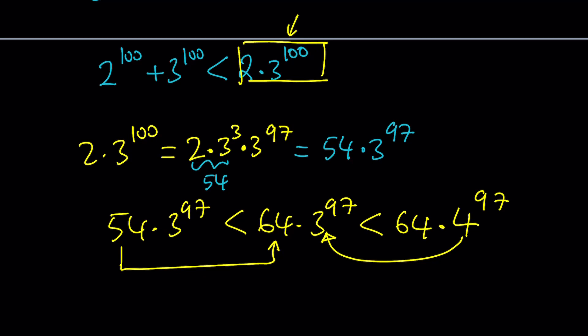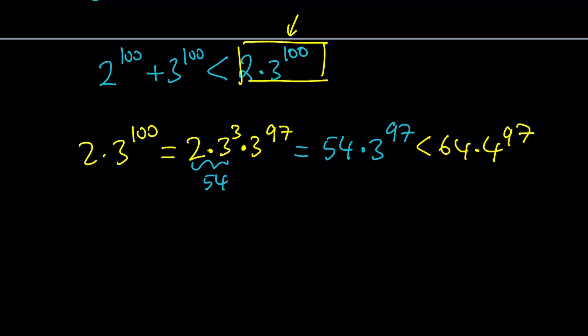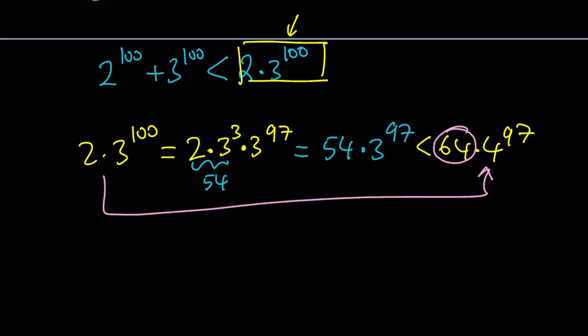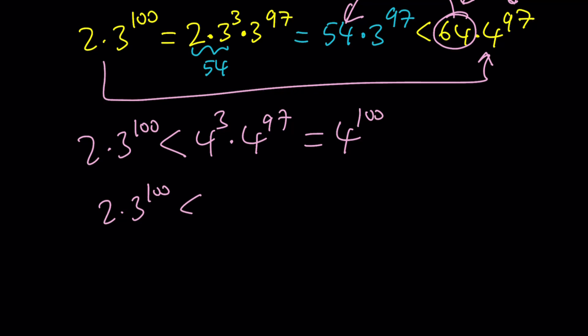Now here's what we proved. We proved that this number is less than 64 times 4 to the power 97. So let's go ahead and erase the bottom part so we can just conclude it. We have 2 times 3 to the power 100, and it's less than 64 times 4 to the power 97. But 64 is 4 to the third power — that's why I picked and compared it to 54 — because we're going to be able to combine these two powers. So 2 times 3 to the power 100 is less than 4 to the power 3 times 4 to the power 97, which is 4 to the power 100. So 2 times 3 to the power 100 is less than 4 to the power 100.